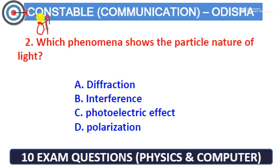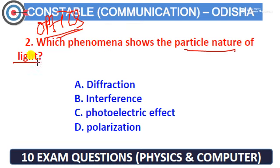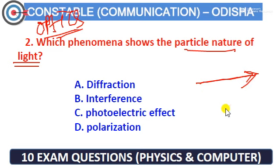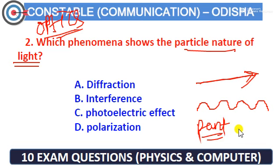If we have a discussion about optics, then we have a question about optics: which phenomenon shows the particle nature of light? Light travels in a straight line. The question is about the particle nature of light. What is the particle nature? How does particle nature look like a particle? Diffraction, interaction, interference, polarization — these are terms, but in this case we will discuss the particle nature.